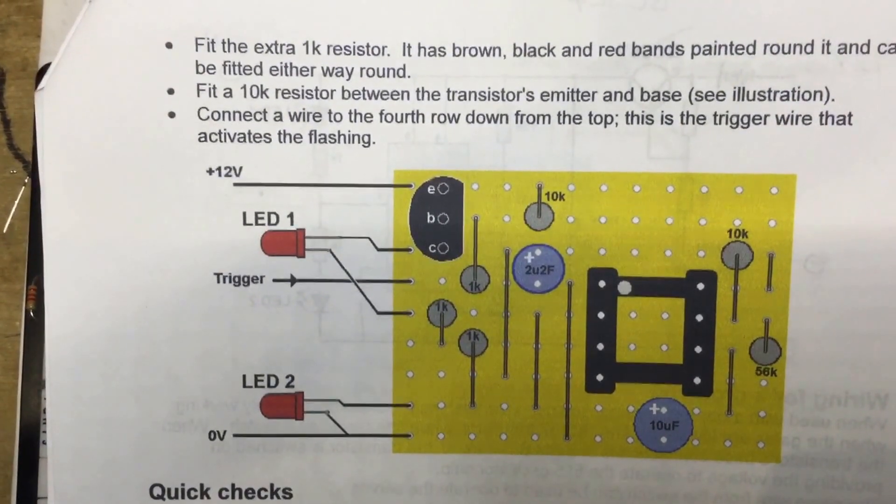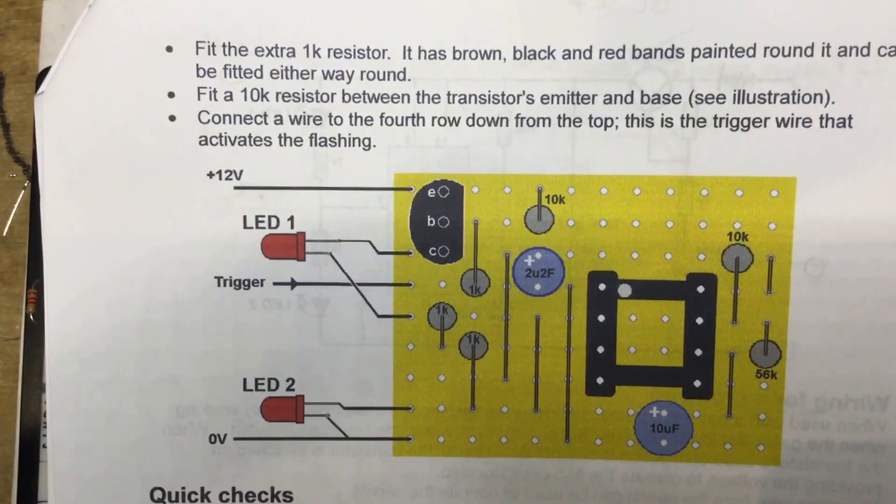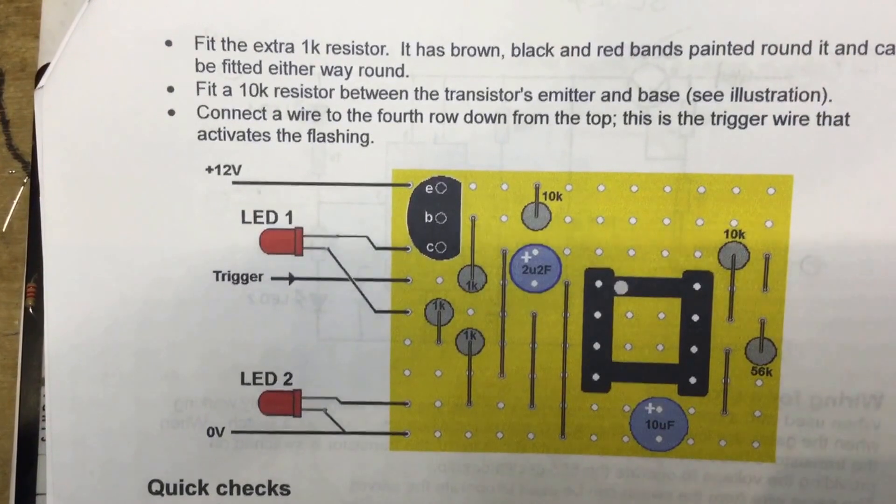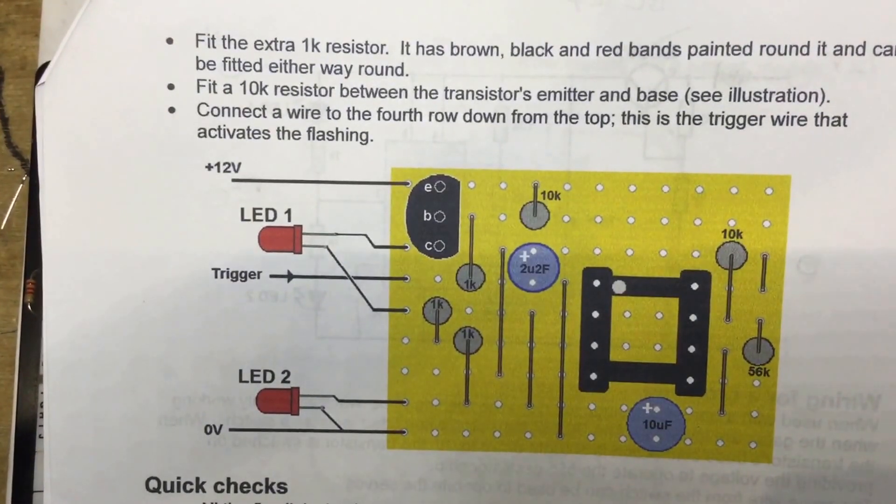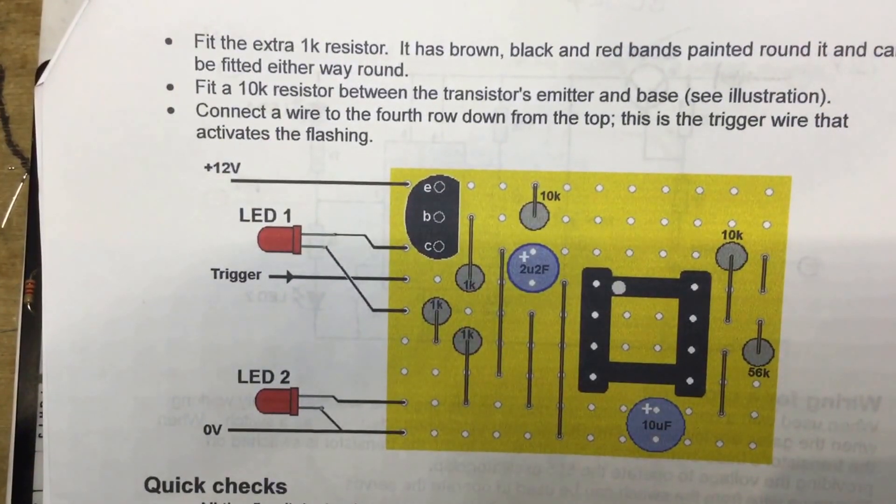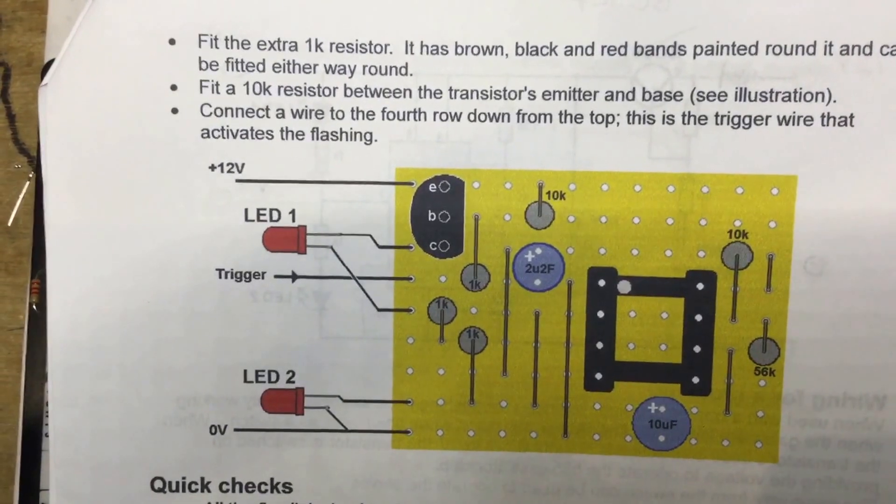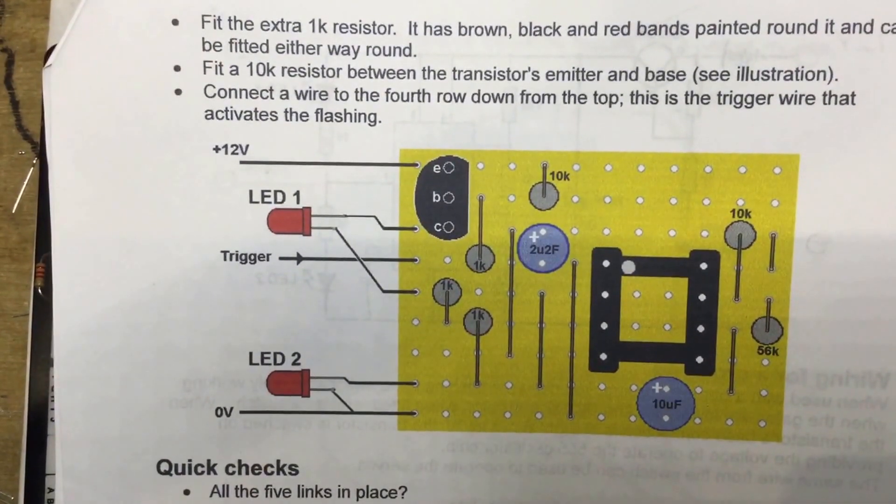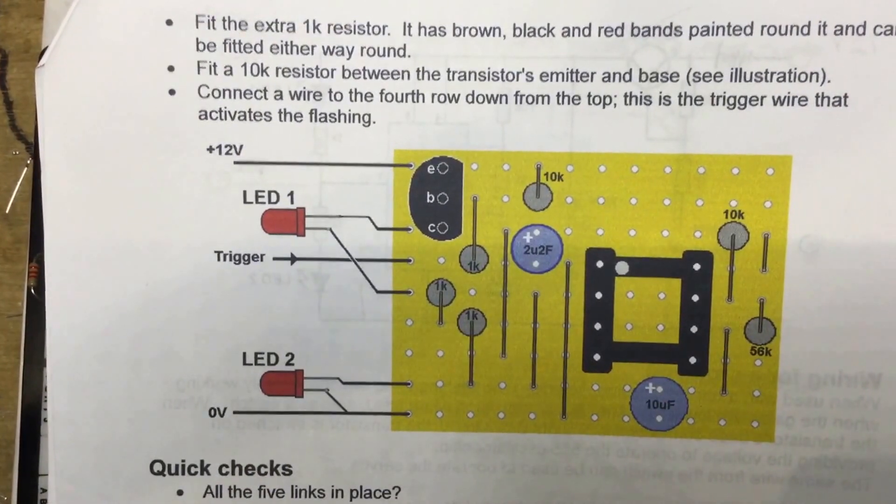So that one will be turned on every time the 555 has its output low. The bottom LED is connected to the output line by a 1k resistor and it goes to ground, so that LED is turned on every time the output of the 555 timer is high.